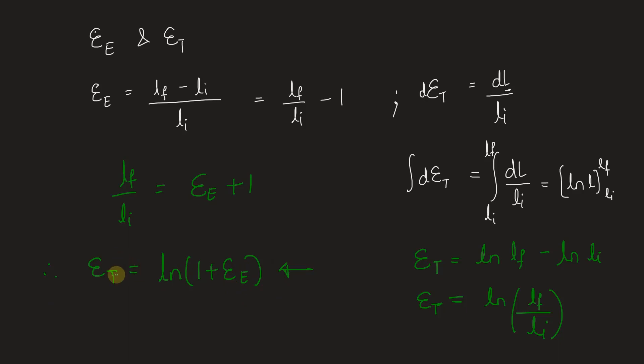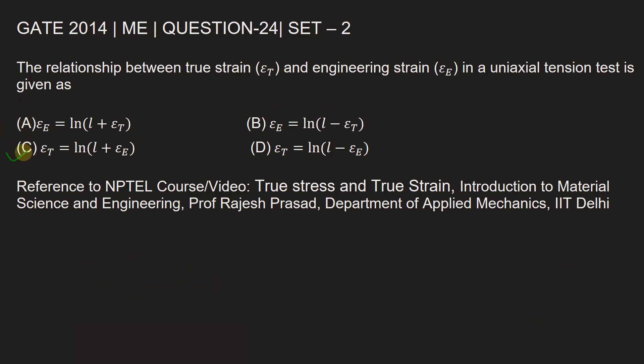Let's go back and mark the correct option in which this will be found. So it's in option C. Be careful while marking the option, they are very close. So epsilon_t, true strain, is equal to natural log of 1 plus engineering strain.